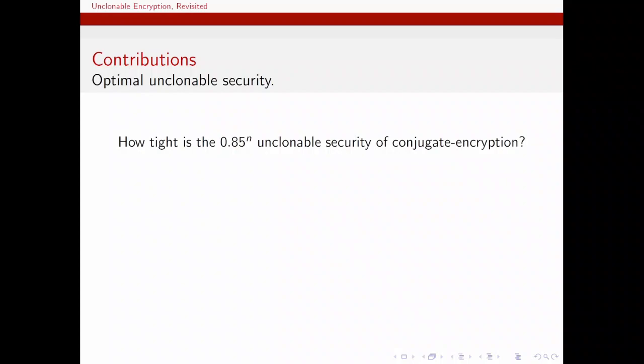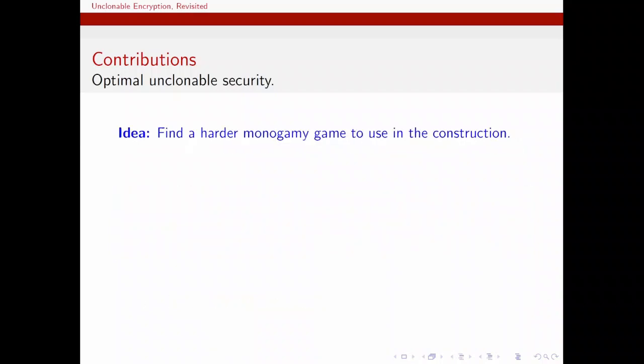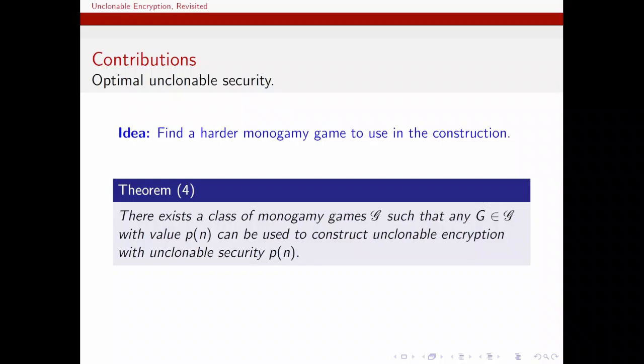Next, we explore whether the 0.85 to the n unclonable security is tight for the conjugate encryption. It turns out it is tight in the sense that it cannot be arbitrarily close to 0.5 to the n due to a universal cloning attack which we present. One way to potentially get closer to 0.5 to the n is to find a harder monogamy of entanglement game and base the construction on that game. We show that the use of Wiesner bases can be generalized to include a larger class of bases and the corresponding monogamy of entanglement games. And such bases and such monogamy games have been analyzed. One example is coset states.